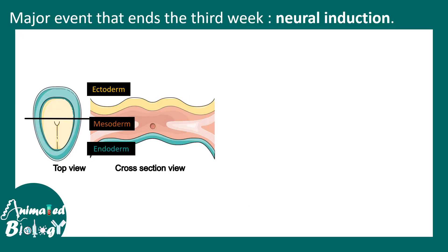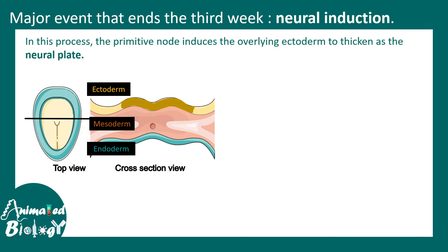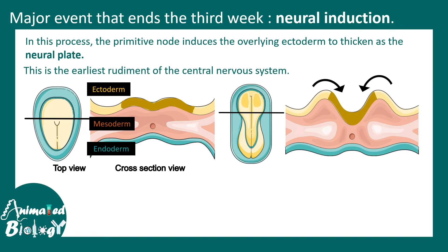The major event that happens at the end of the third week is neural induction, which is the key sub-process within neurulation. In this case, the primitive node induces the overlapping new ectoderm to form the neural plate, or neuroectoderm. The neural tube is derived from the ectoderm — the entire nervous system is derived from the ectoderm. The notochord actually induces formation of this ectoderm to become neuroectoderm, and that is the rudimentary nervous system.